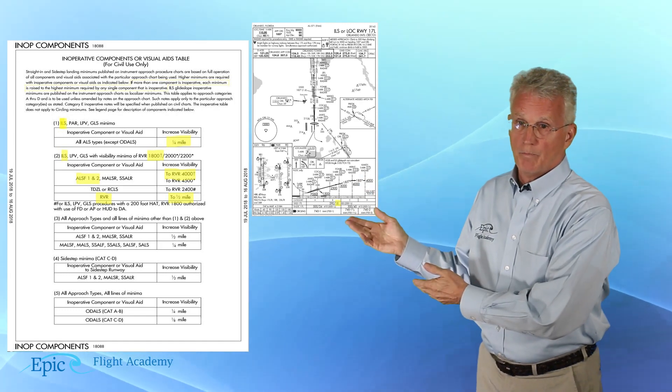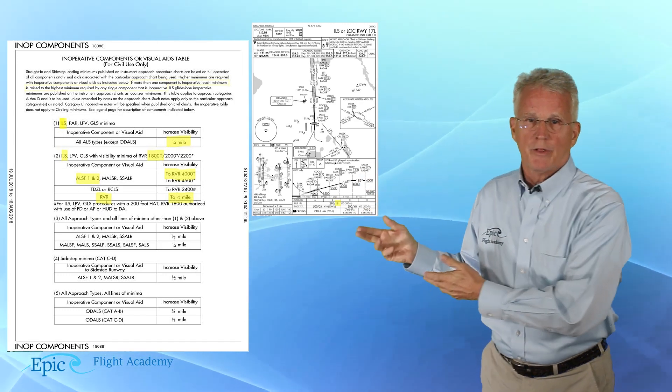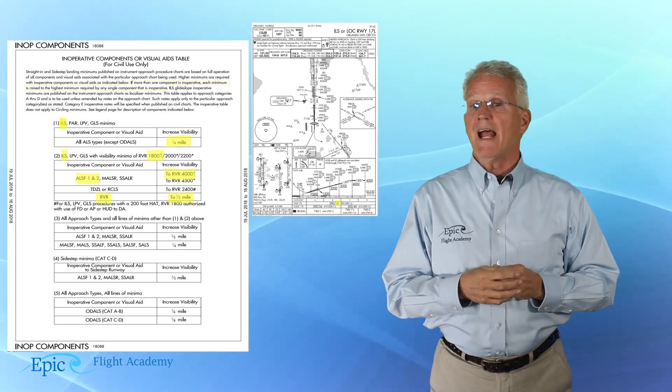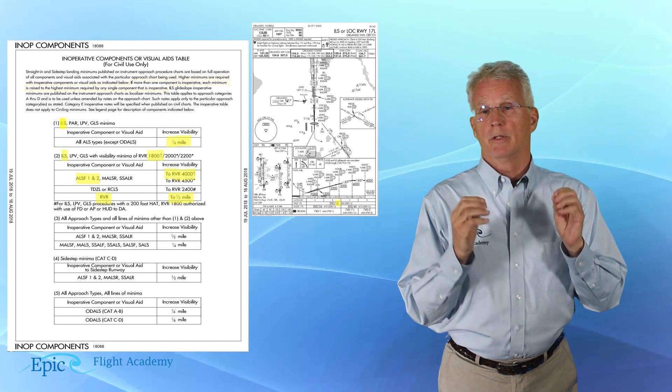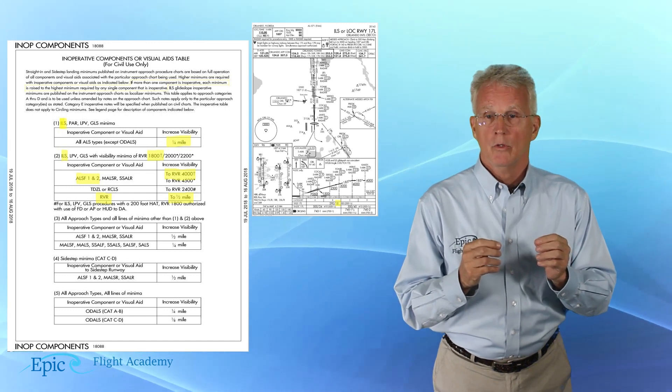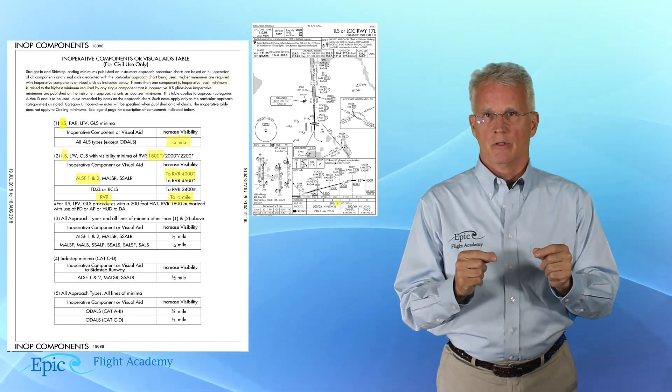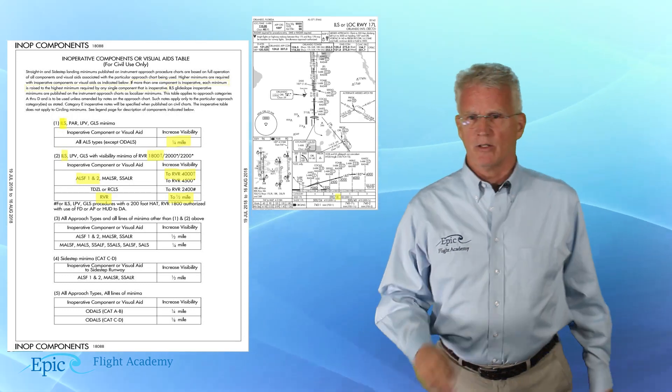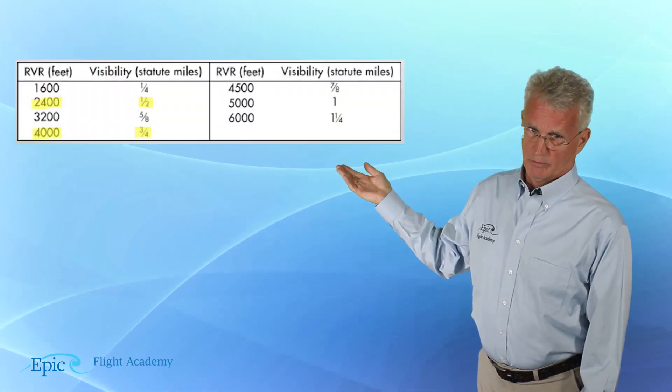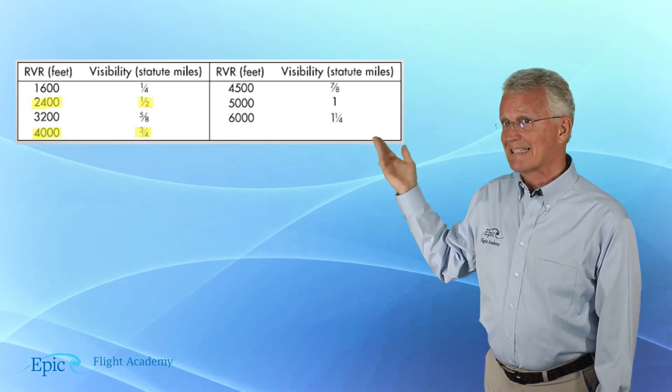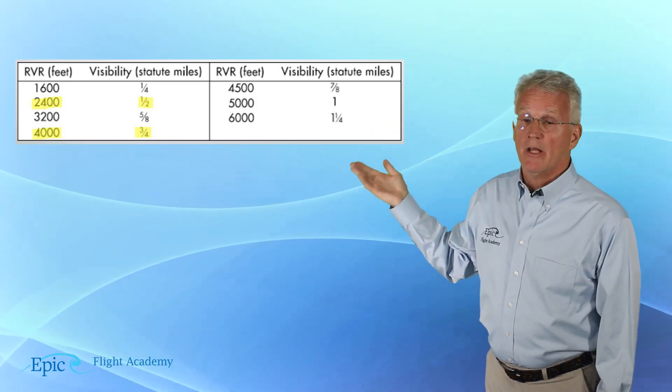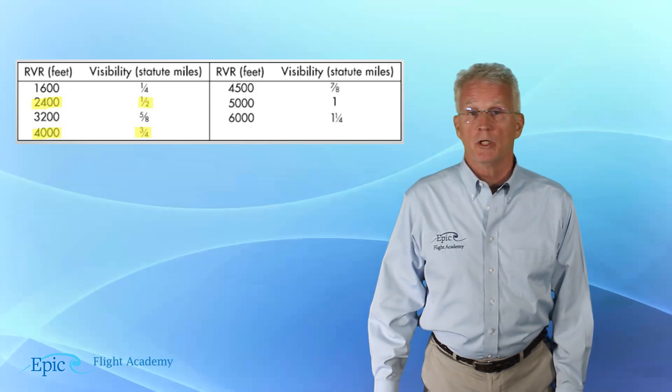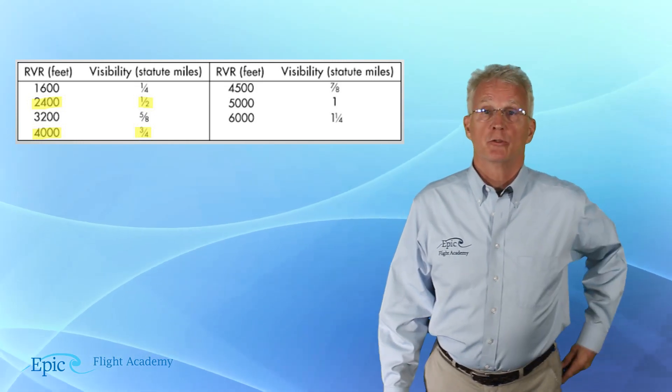In addition to that, see in section 2, it shows us that with an ALSIF-2 inop, we have to raise the minimum visibility requirements to 4,000 RVR. I'd like you to have a look at this conversion table and see that it tells us that 4,000 RVR is approximately three-quarters of a statute mile.